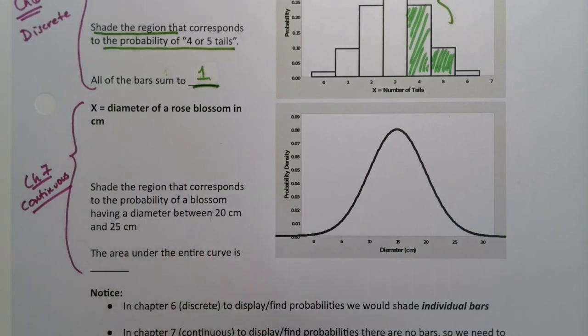You'd have to take out those little calipers, those little pinchy things, to measure the diameter of a rose blossom. But it's continuous, right? If you have a better measured caliper, then you should be able to get more decimal places.